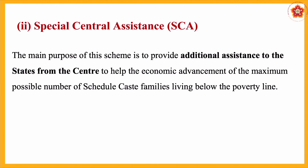The Special Central Assistance (SCA) scheme provides additional assistance — funds — from the centre to the states, to help the economic advancement of the maximum possible number of scheduled caste families living below the poverty line. Even if the state government does not have enough funds, the central government provides extra funds under this scheme.